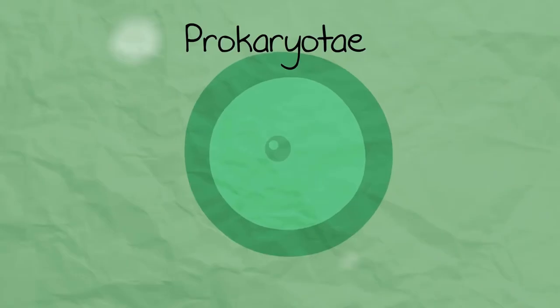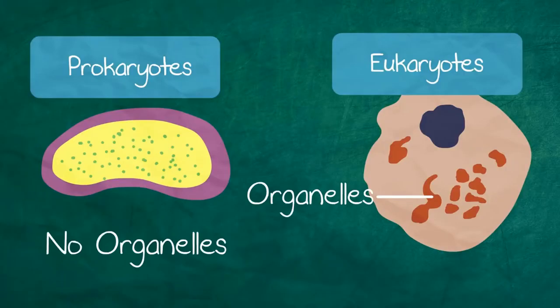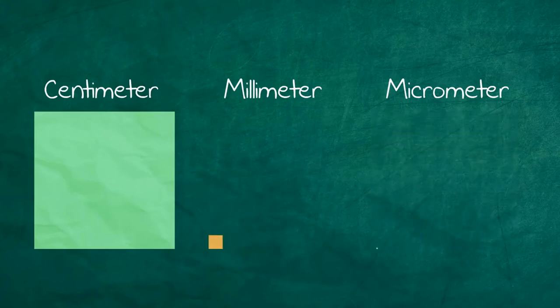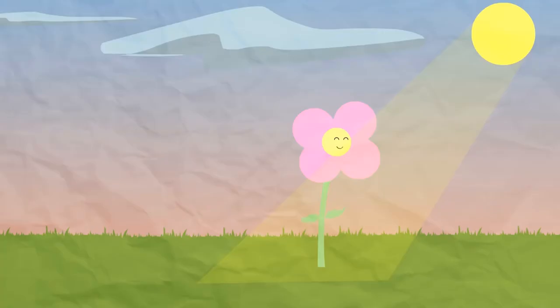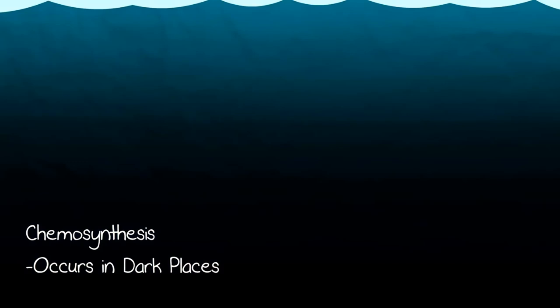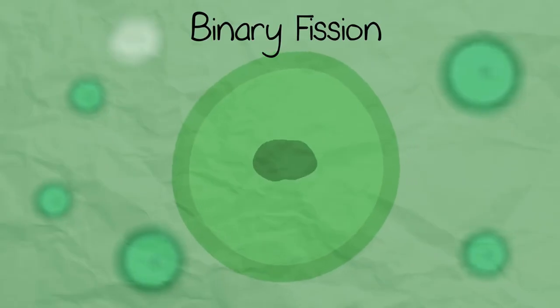And finally, the Prokaryota kingdom. They are unicellular. They lack organelles that are seen in eukaryotes. They are typically really small, about 10 micrometers in size, much too small to see with the human eye. They have cell walls and are autotrophic using photosynthesis and chemosynthesis with light, and are heterotrophic. They are defined by binary fission, not mitosis.